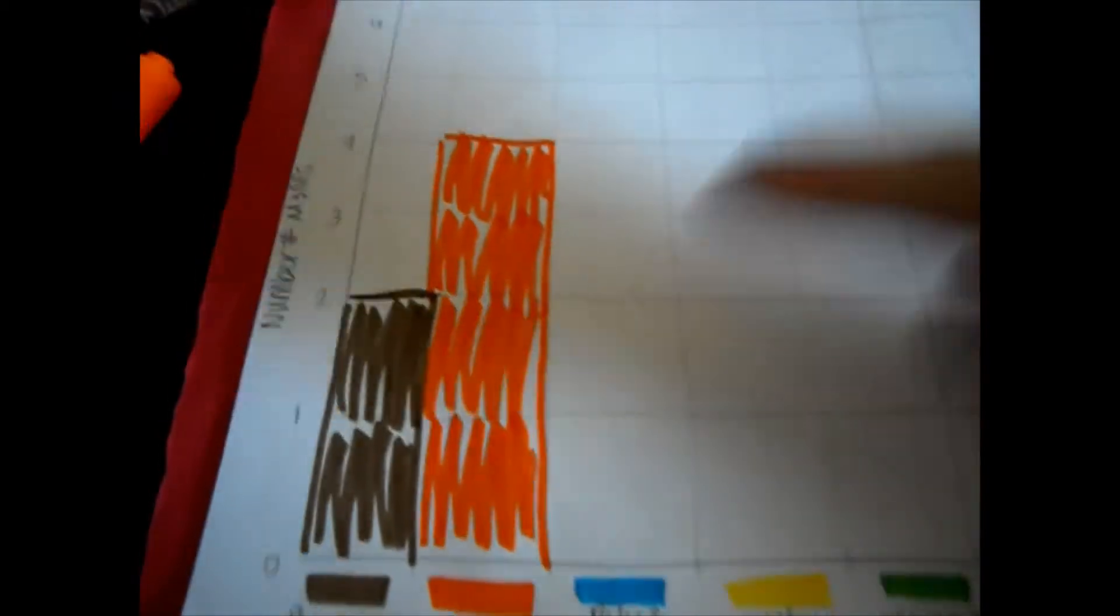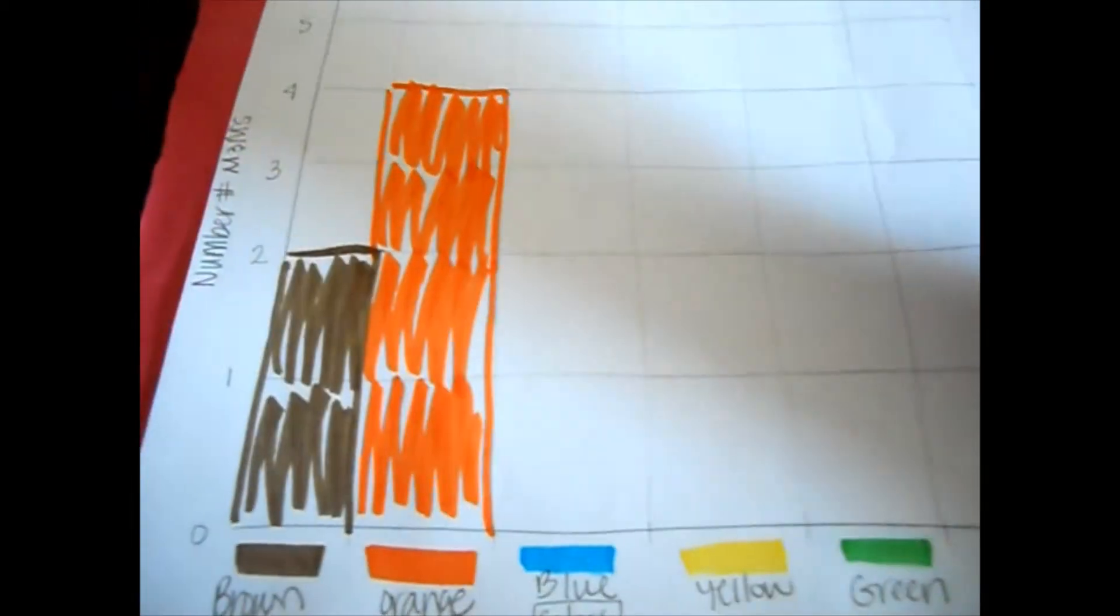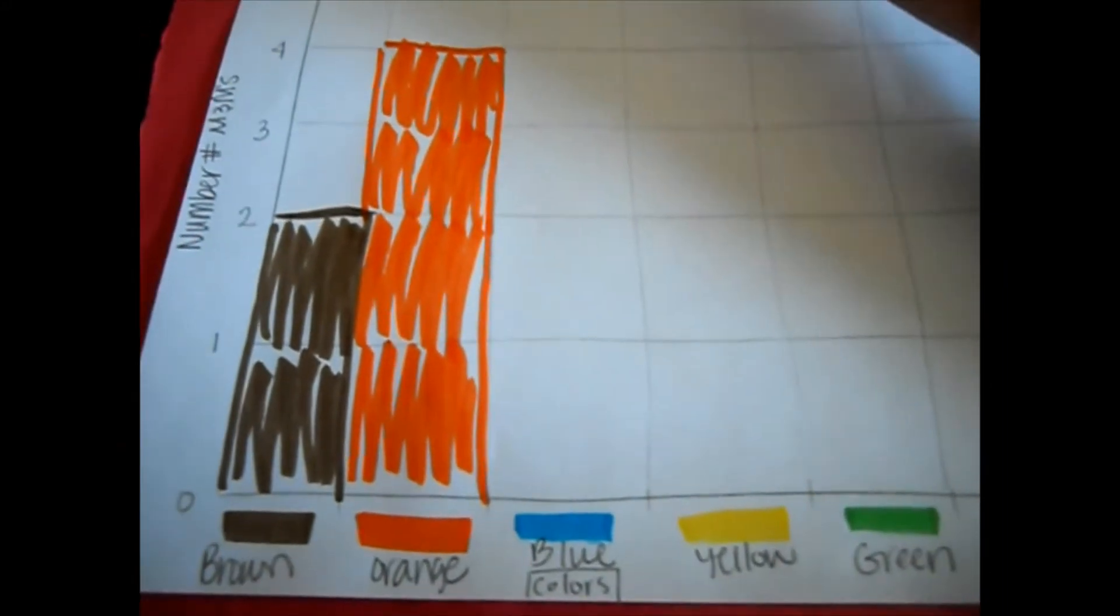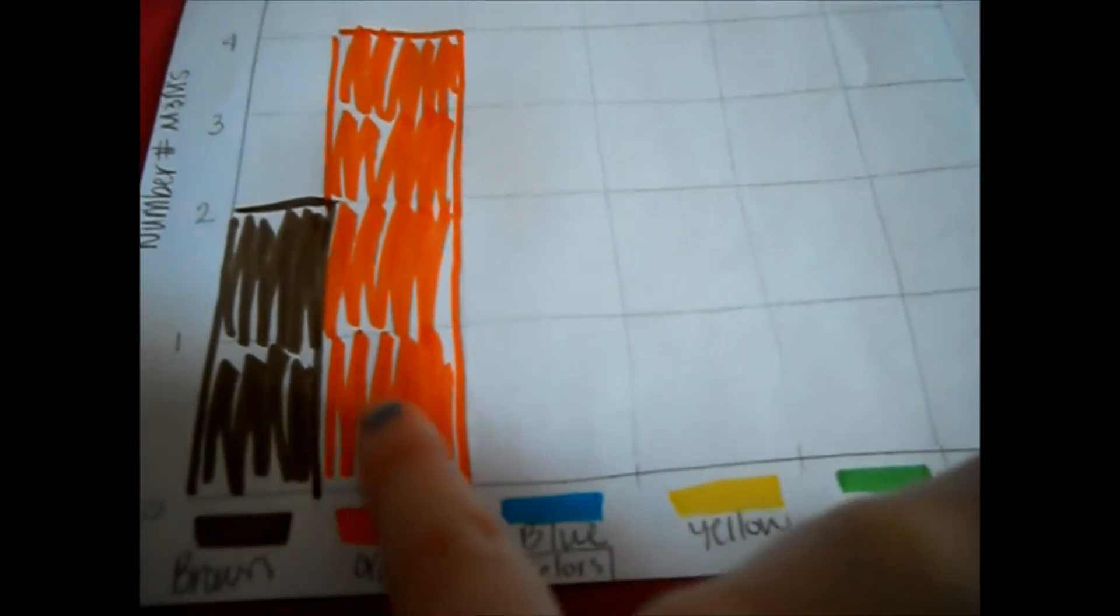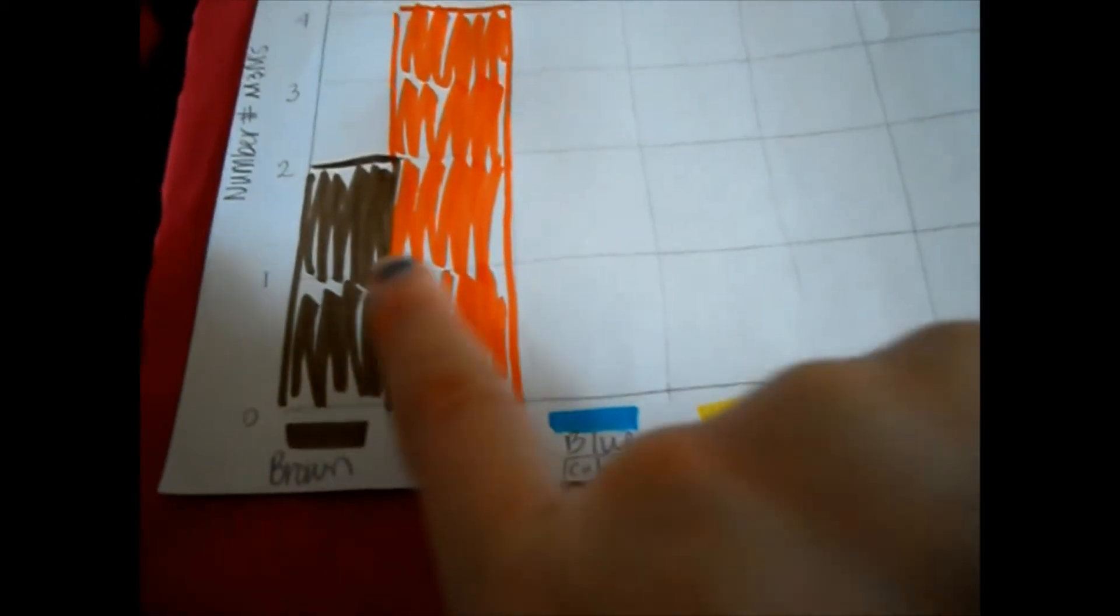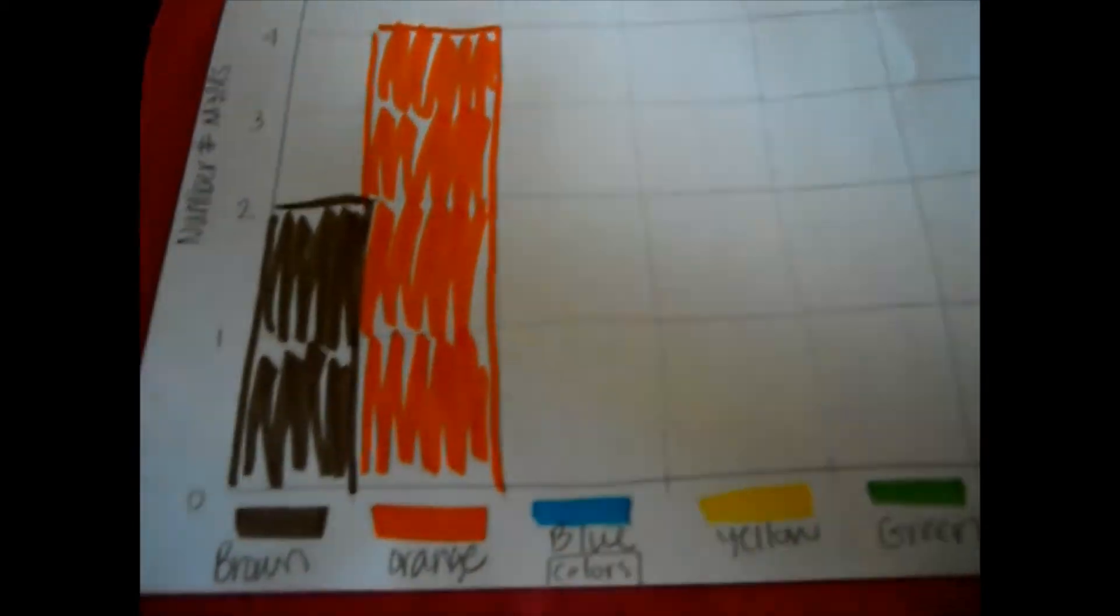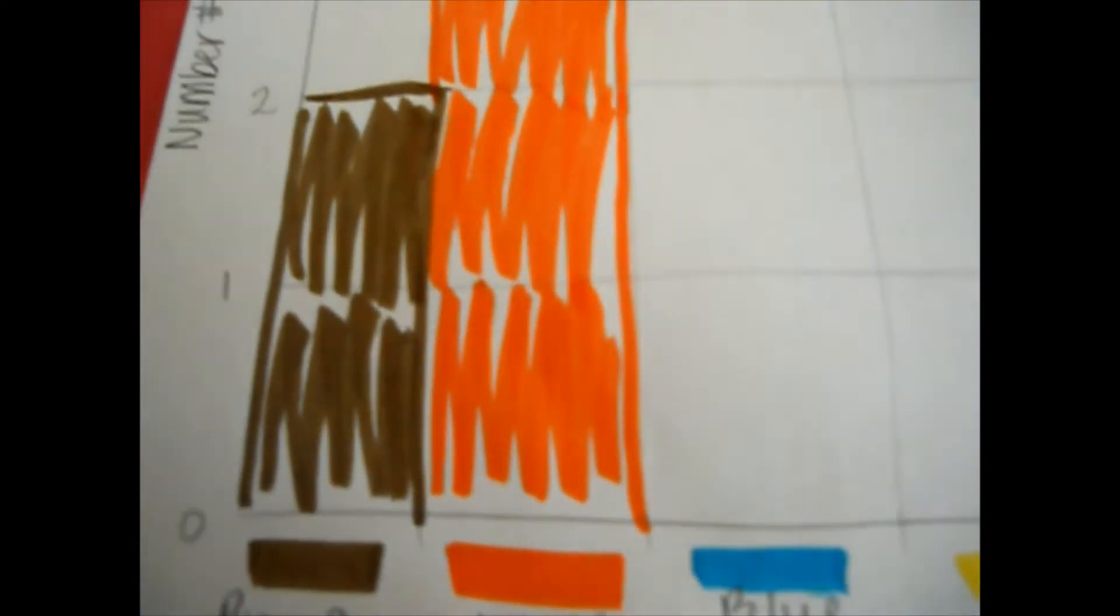And you can see, you can start telling or helping your child say, oh, which color has the most or which one is the tallest or the biggest from these two? And you can say orange. And then the brown one has less than the orange. Work on the less than, the more.